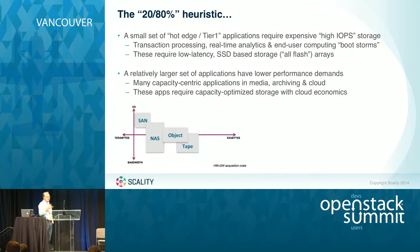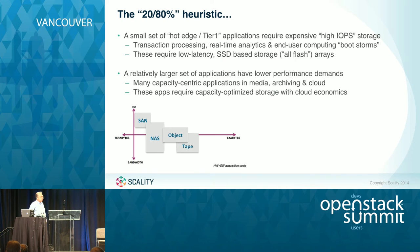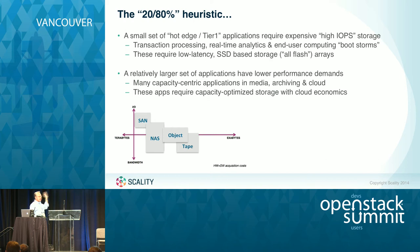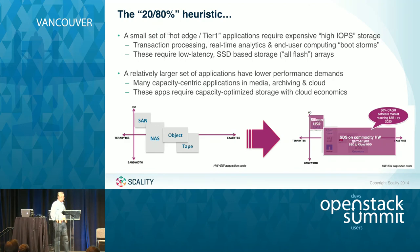A relatively small set of applications are what I would call hot-edge tier one — they need thousands to tens of thousands of IOPS, something to tolerate boot storms, low latency, quick storage, probably flash-based. However, there's a relatively larger set of applications that are more capacity-centric, capacity-optimized. These are things you can leverage lower-cost storage for because the IOPS demands are lower. Our view is that the world is converging from a multi-tier storage approach — SAN, NAS, some object storage, and even tape for long-time archives — down to two tiers: the hot-edge tier and the capacity-optimized tier.